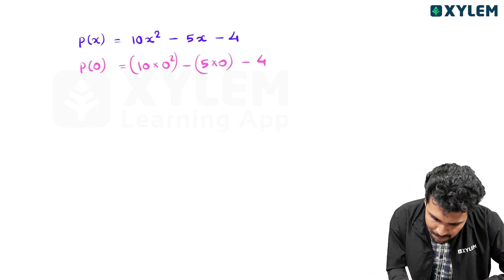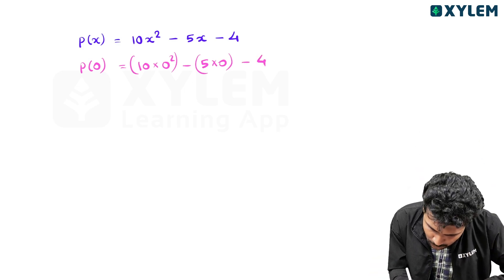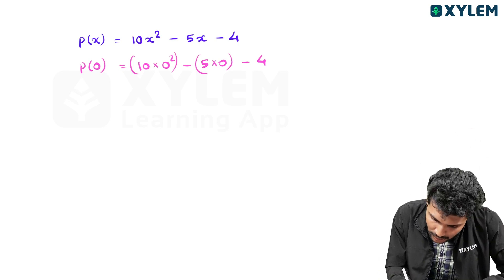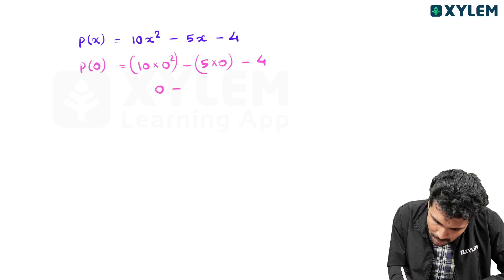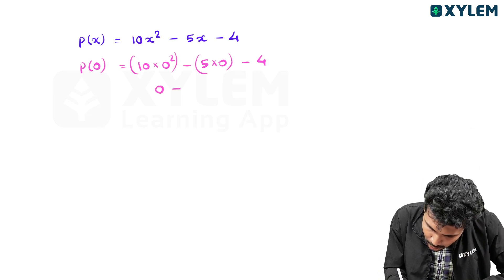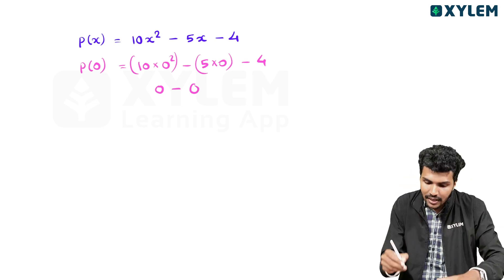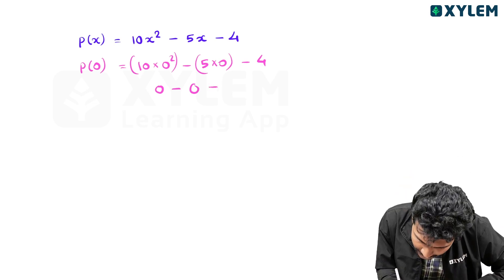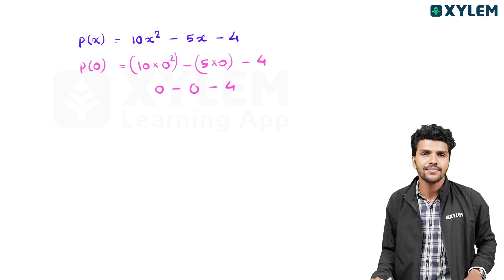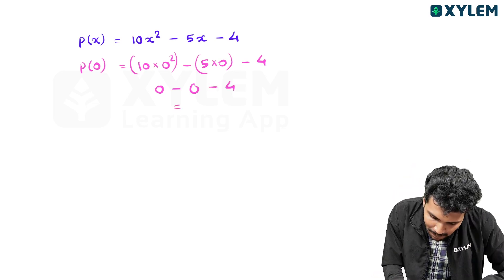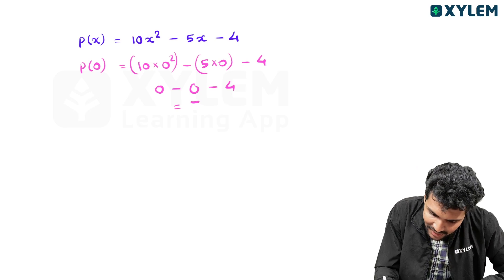One minus five plus two is equal to zero. So P of zero is equal to zero. The quantity is equal to zero, which gives the value of zero. The value is confirmed.